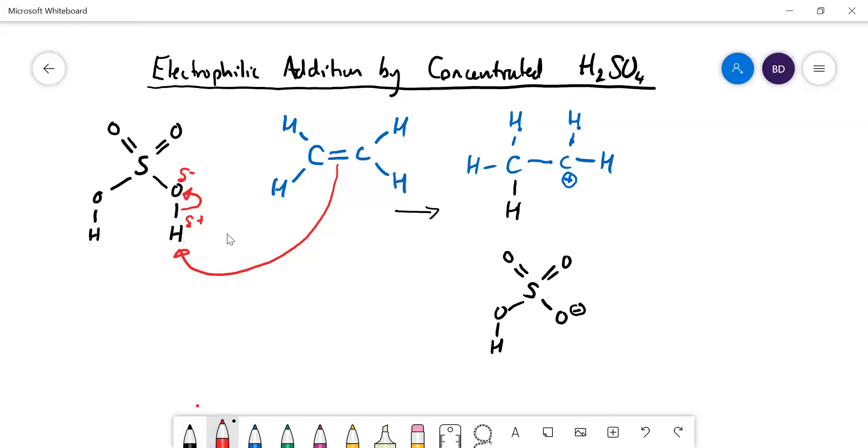Right, so then what happens next is just like the bromide ion reacted with the carbocation here. This is going to react with it. So it's exactly the same, that lone pair goes onto there. Okay, so let's draw the intermediate.